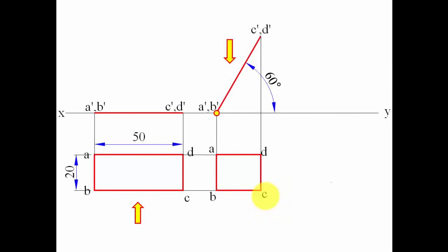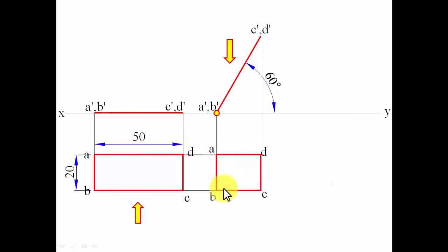In step three we go for edge inclination. The edge is inclined at 30 degrees with the VP, and any inclination associated with the vertical plane can only be seen from the top. We recreate the top view with the smaller edge at 30 degrees. The key logic: if the smaller edge makes angle theta with the XY line, the larger edge makes 90 minus theta. Since the smaller edge is 30 degrees, the larger edge BC makes 90 minus 30 equals 60 degrees with the XY line.